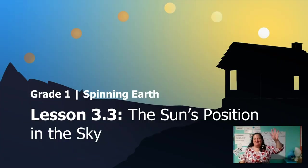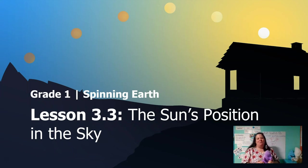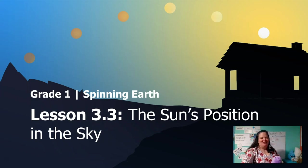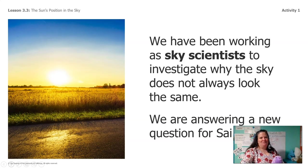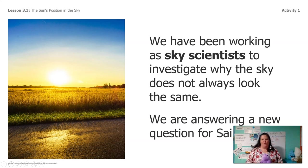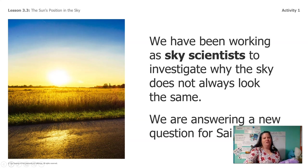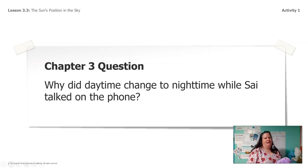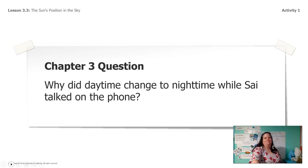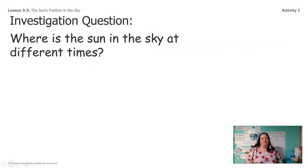Hi everybody, it's me Miss Ward and my friend Lavender, and we're here today to do lesson 3.3, the Sun's position in the sky. We've been working as sky scientists to investigate why the sky does not always look the same, and now we're answering a new question we got from our friend Sai. He asked us: why did daytime change to nighttime while Sai talked on the phone?